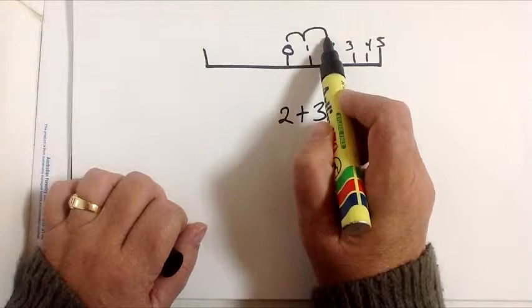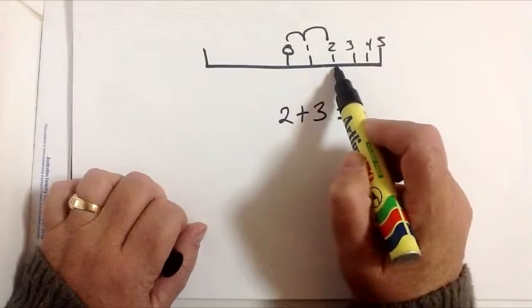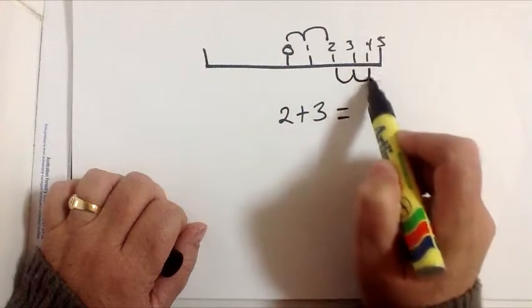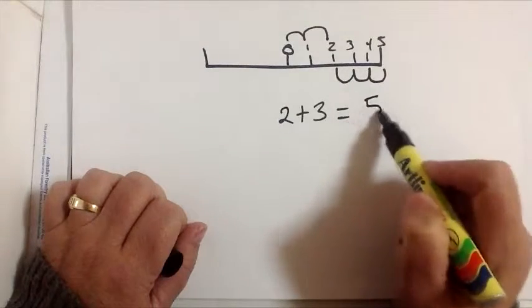1, 2 and then 1, 2, 3. So the answer is 5.